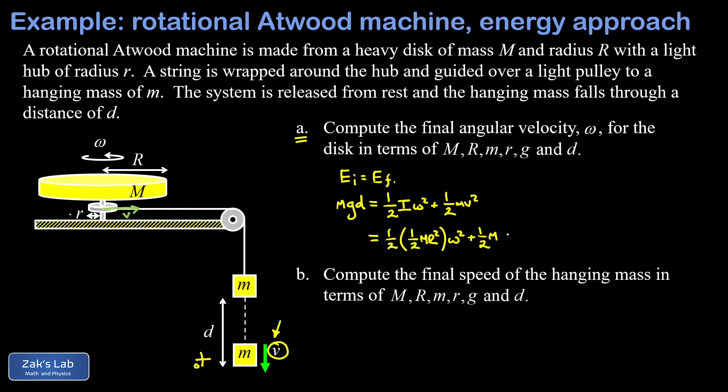Because the string isn't slipping against the hub, it means the tangential speed at the edge of the hub is the same v. We have a nice formula relating the tangential speed at the edge of a rotating disk to the angular velocity, and that's just v equals r omega. It's critically important that you use the little r, the radius of the hub the string is actually wrapped around.